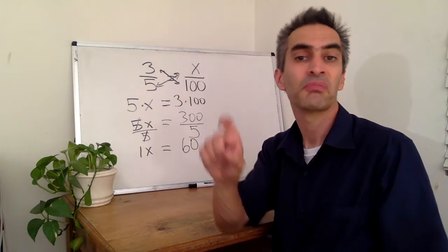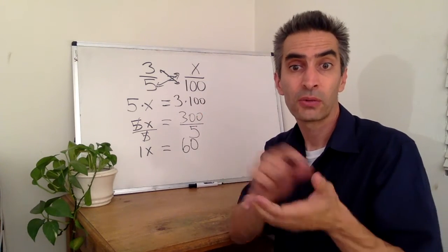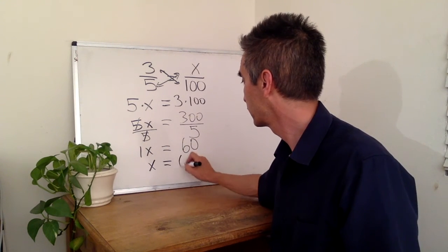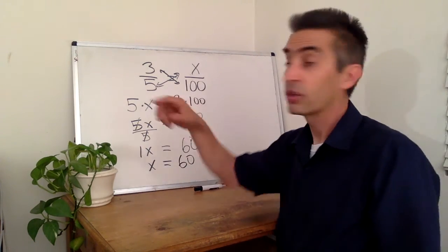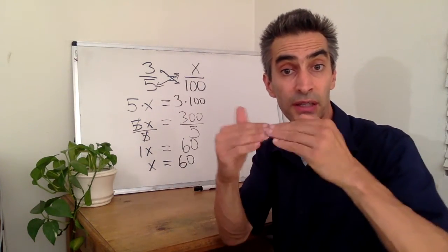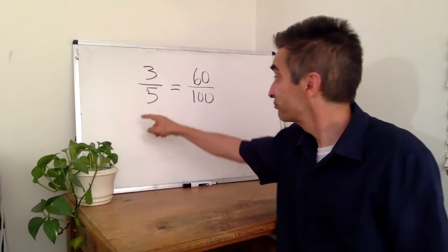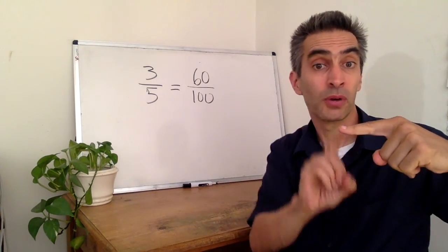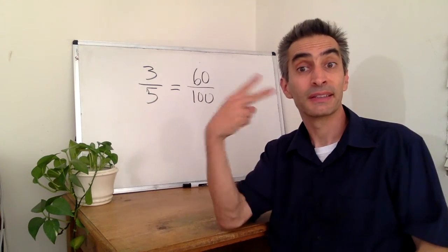One x — we can change that to just x. This means that three-fifths equals sixty over 100. And we've got a solution. Three-fifths equals sixty over 100. Hope you enjoyed it. See you later. Good luck.